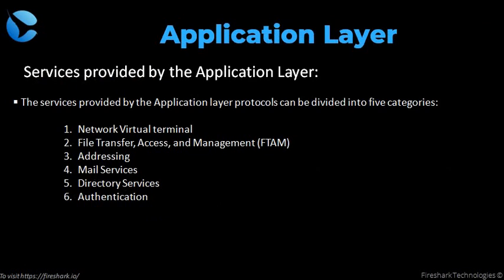The services provided by the application layer are listed in five categories. Network virtual terminal: the application layer allows the user to log on to a remote host by creating a software emulation of a terminal at the remote host, so the remote host thinks it is communicating with one of its own terminals. File access: it allows users to access files in the remote computer, retrieve files from the computer, and manage files in the remote computer.